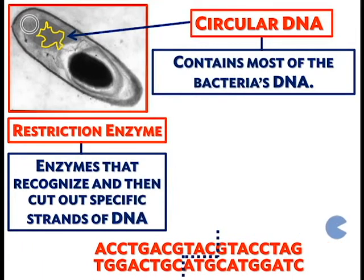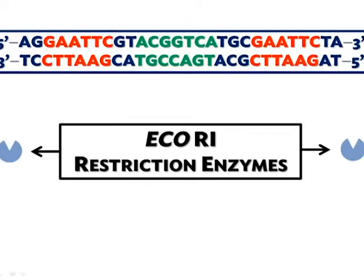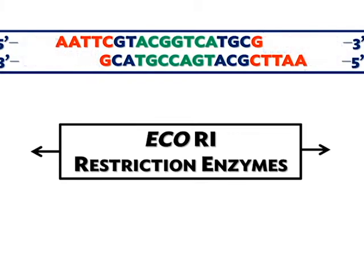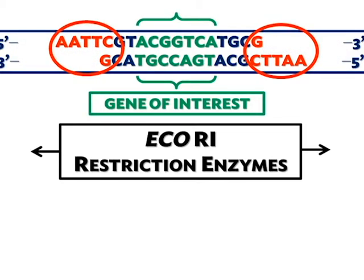One of the most common restriction enzymes is known as EcoR1. By inserting two EcoR1 restriction enzymes into the bacteria's DNA, we now have our gene of interest. The short single-stranded tails that are left behind are called sticky ends, which will be important later. We have now isolated the crygene from the rest of the bacteria's DNA.